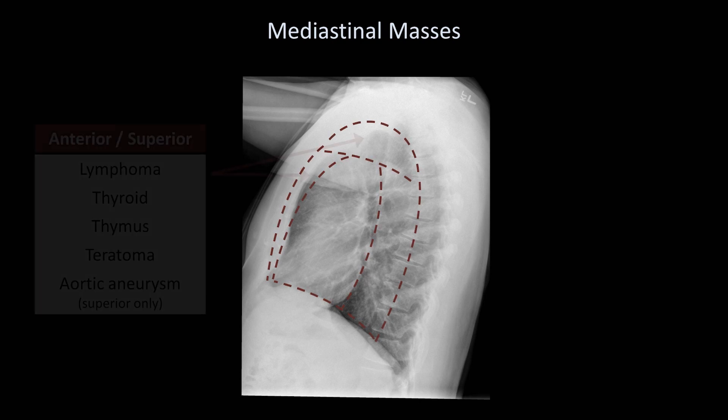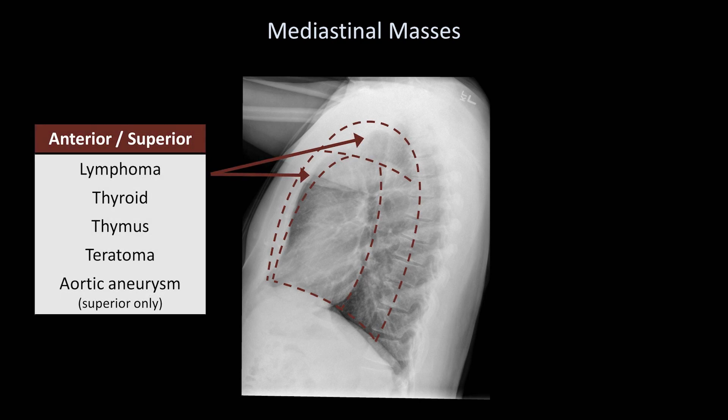The first two regions are the anterior mediastinum — everything anterior to the pericardium and inferior to the sternal angle — and the superior mediastinum, which is everything superior to the sternal angle. The differential diagnosis of masses in these two regions overlap greatly, so I'll consider them together. They include lymphoma, enlarged thyroid such as a goiter, thymus tumors, teratomas, and when occurring in just the superior mediastinum, an aortic aneurysm.